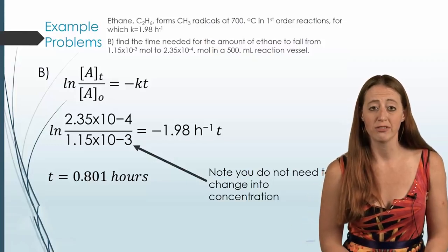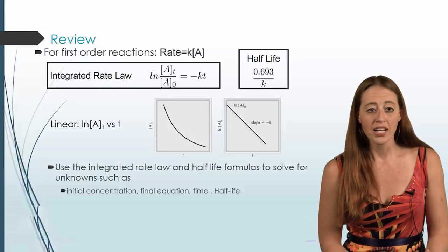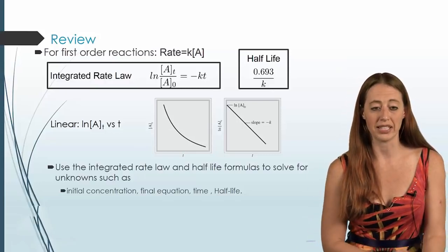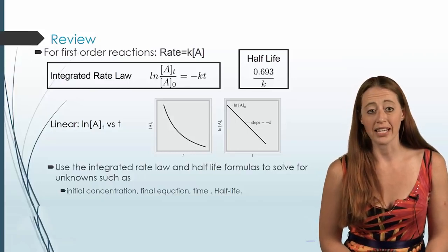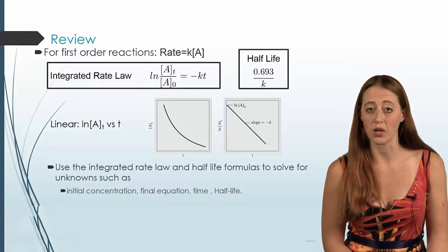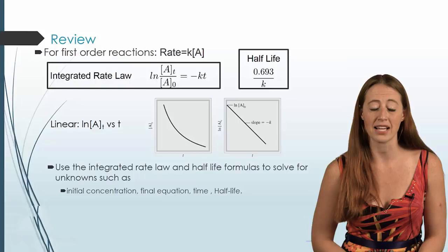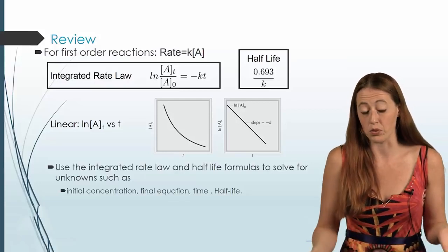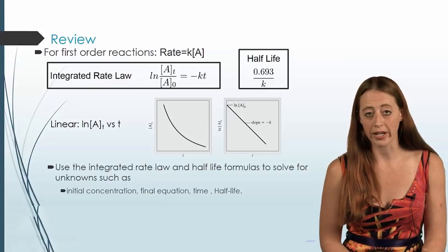Let's do a quick summary review of everything for first order. The rate law is rate equals k times the concentration of A. You have the integrated rate law and the half-life formula, which you'll also solve for on your own. We know the graph is a natural log curve for T versus concentration, and we can get a linear graph by plotting T versus the natural log of concentration — from which we can find the slope and use it to find k. There are many types of questions you can be asked involving concentration, k, or half-life.